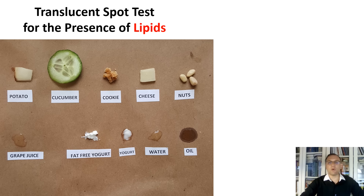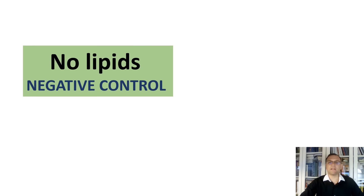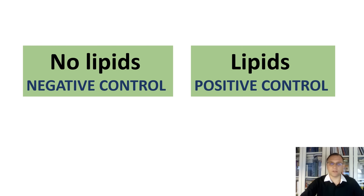Collectively, we call oils and fats lipids. Like in any other experiment, we will have to have controls. In this case, we will have to have two controls: a negative control — no lipids — and a positive control — lipids.